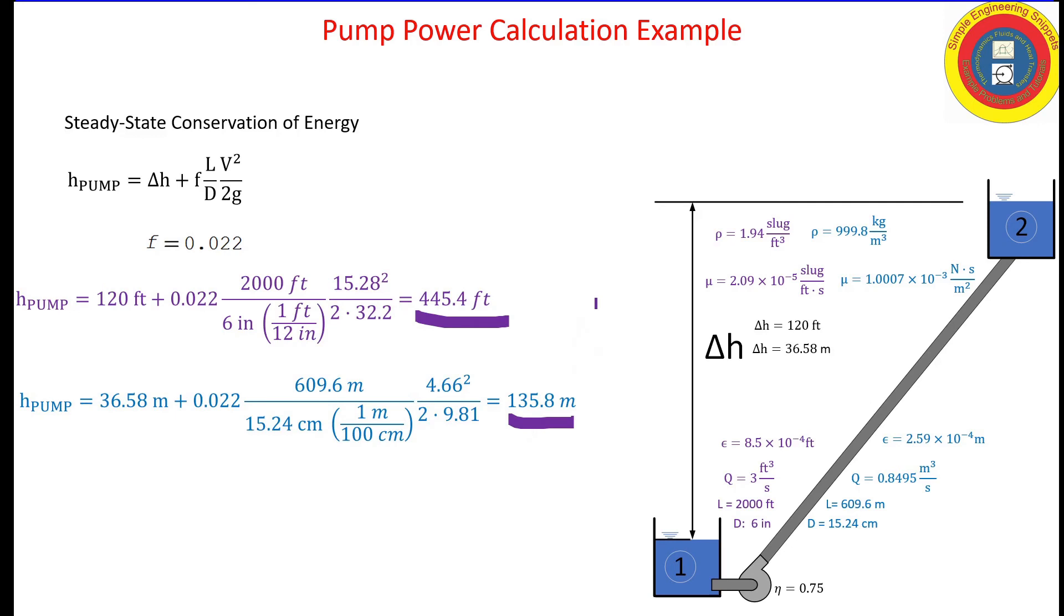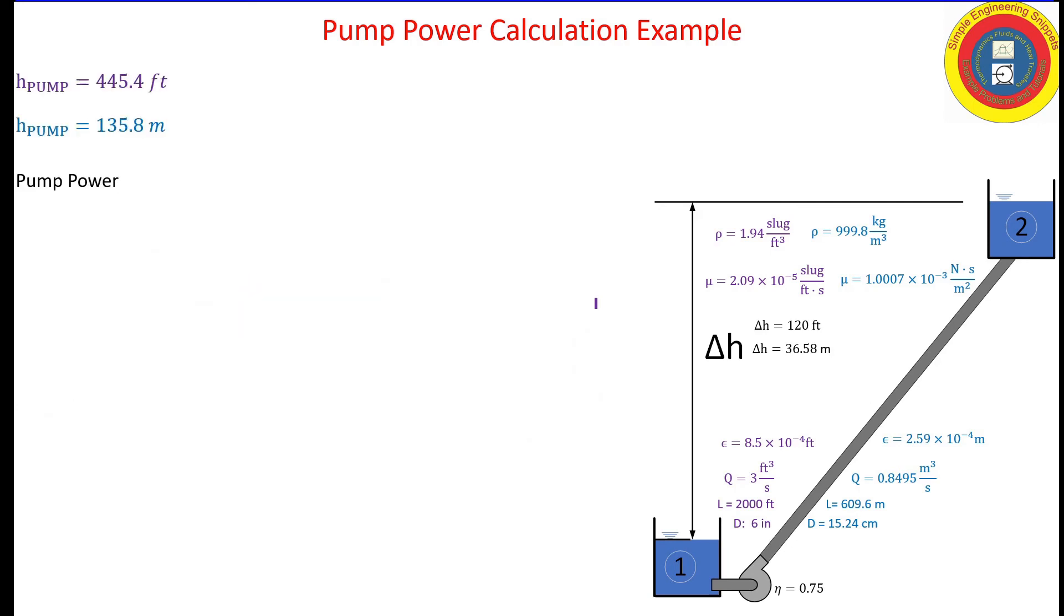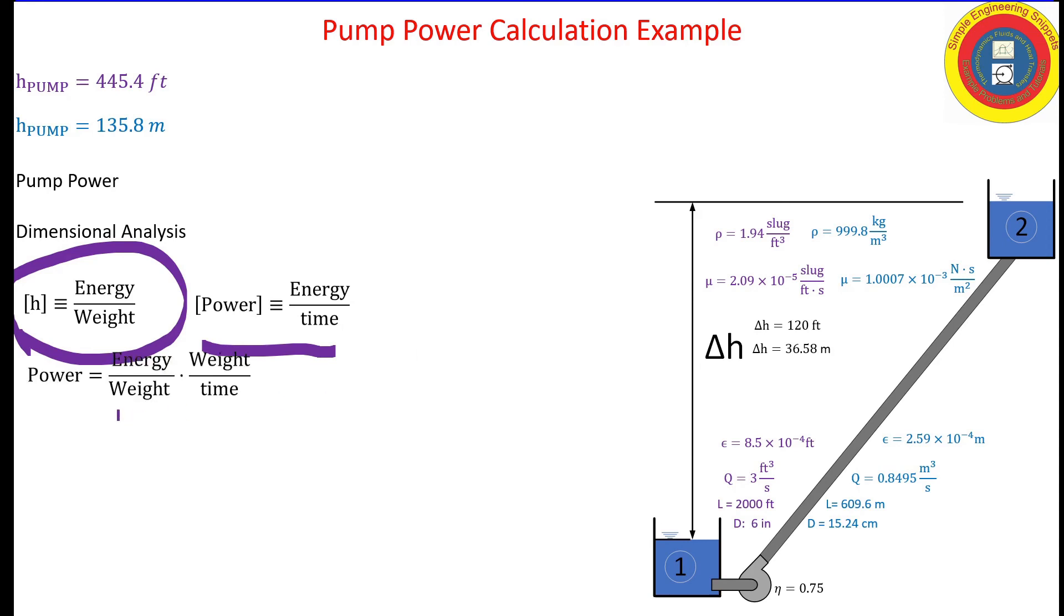We weren't looking for the pump head. We were looking for the pump power. So how do we obtain that? One way is just looking at dimensional analysis. As we stated earlier, my pump head is energy per weight. We know power is energy per time. So to obtain power from pump head, I take the energy per weight and multiply it by weight per time.